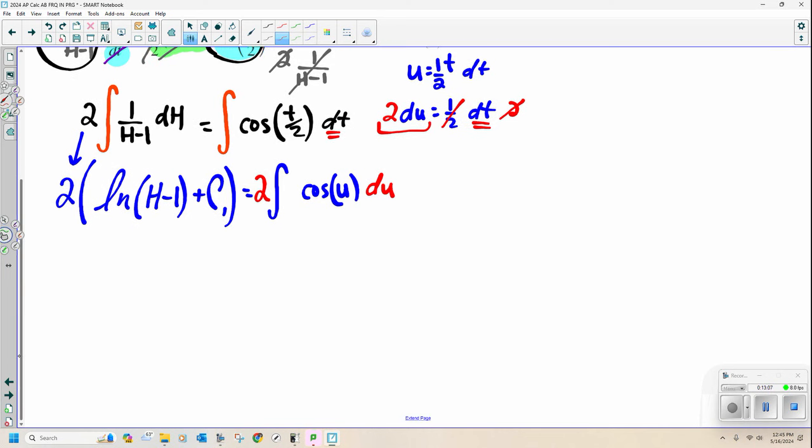Now let's integrate this side. It is 2. What do I integrate to cosine? It's sine of u. Okay? But what is u plus some other constant? Well, what do we got to take the u out and put back in? t over 2, or 1 half t.